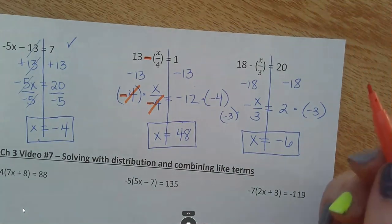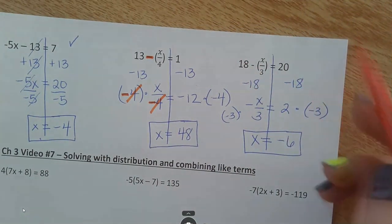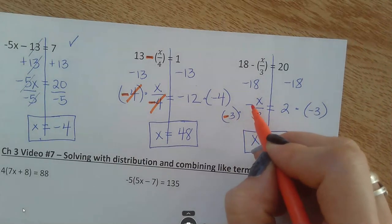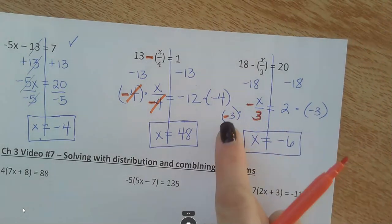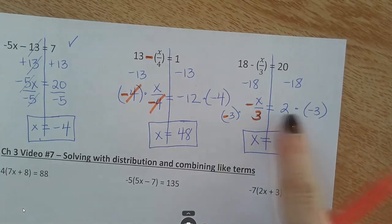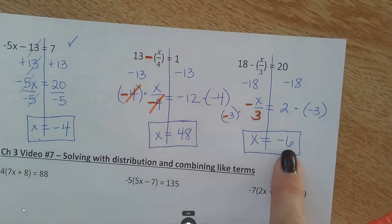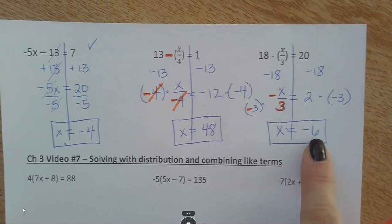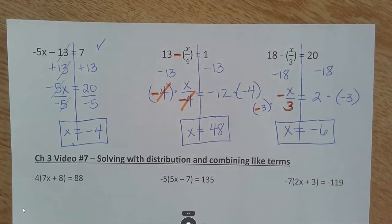Final one is very similar. Minus 18 on both sides. Multiply by a negative 3. So that multiplying and dividing by a negative 3 cancel out. And on this side, different signs is a negative 6. So, that is the end of video 6. Two-step equations.